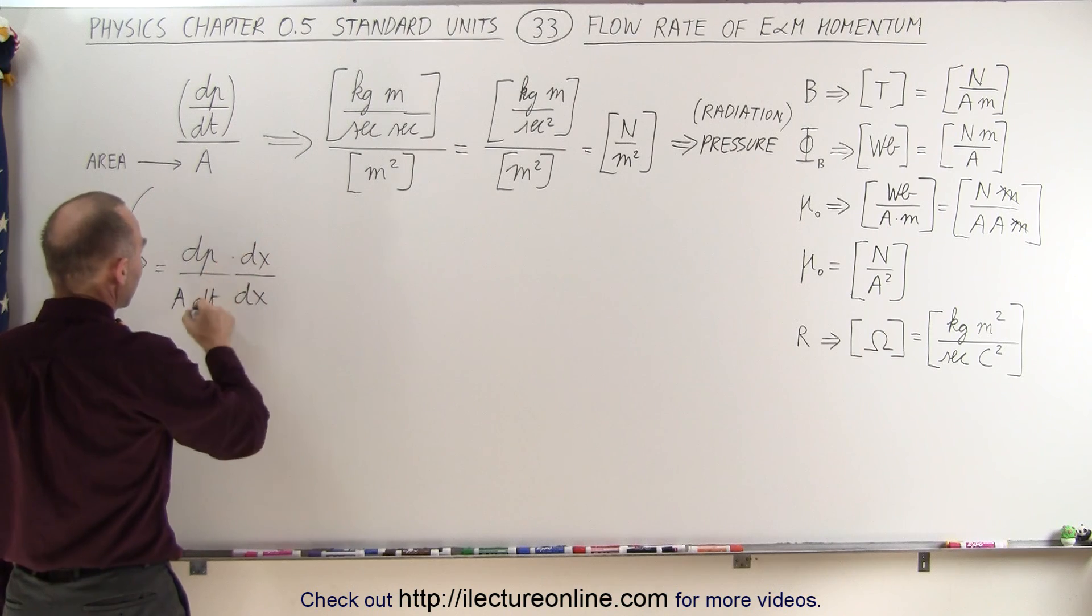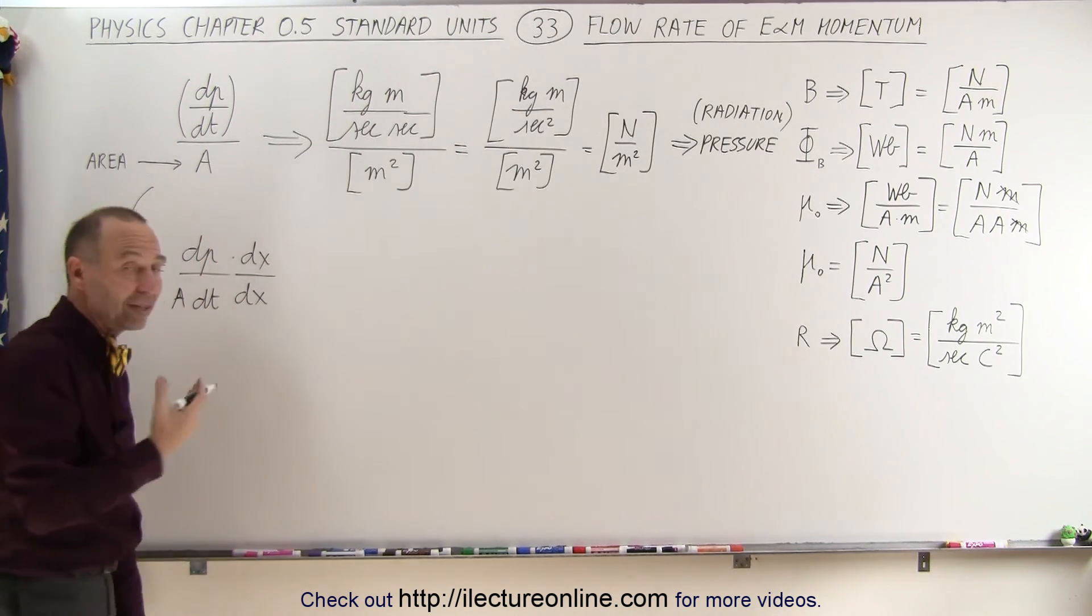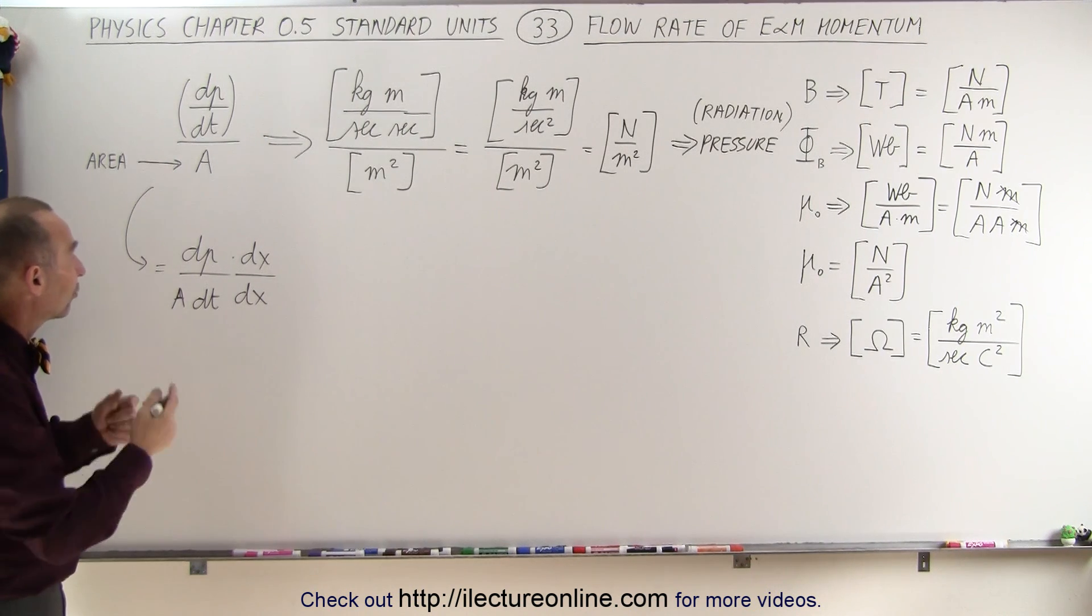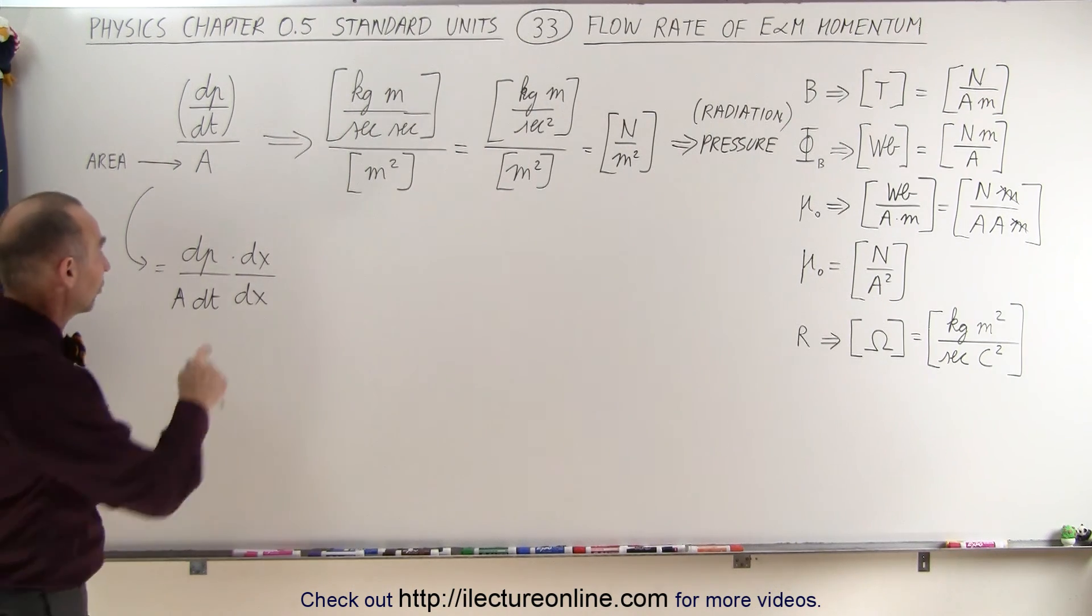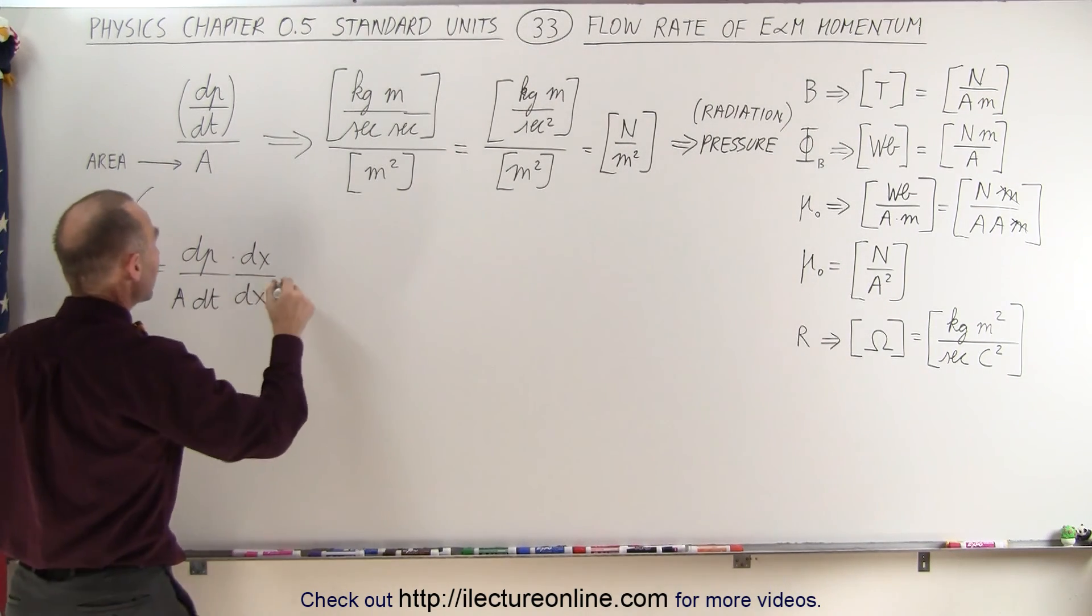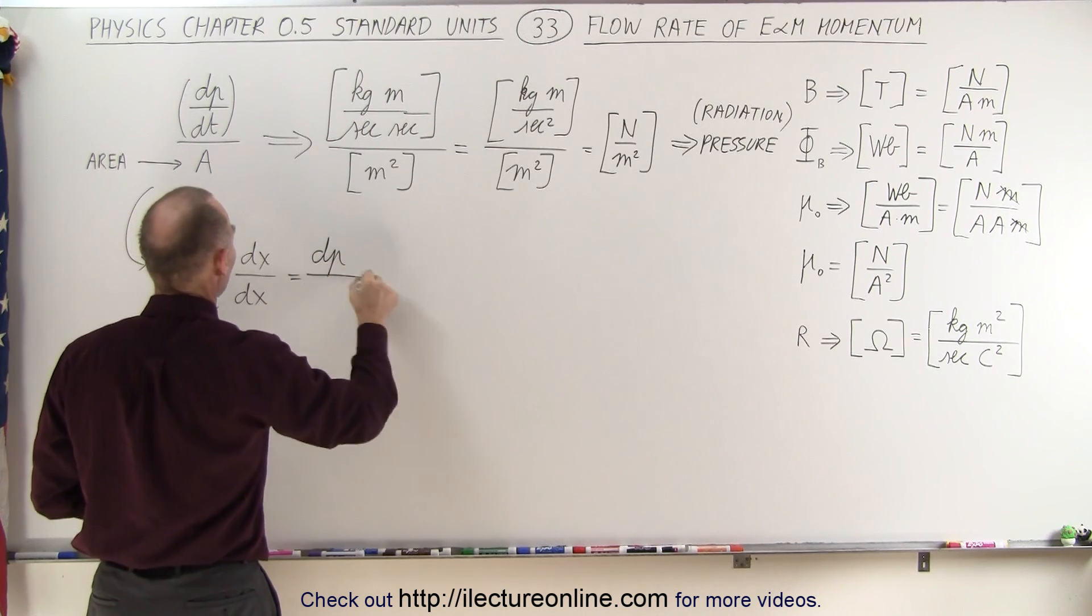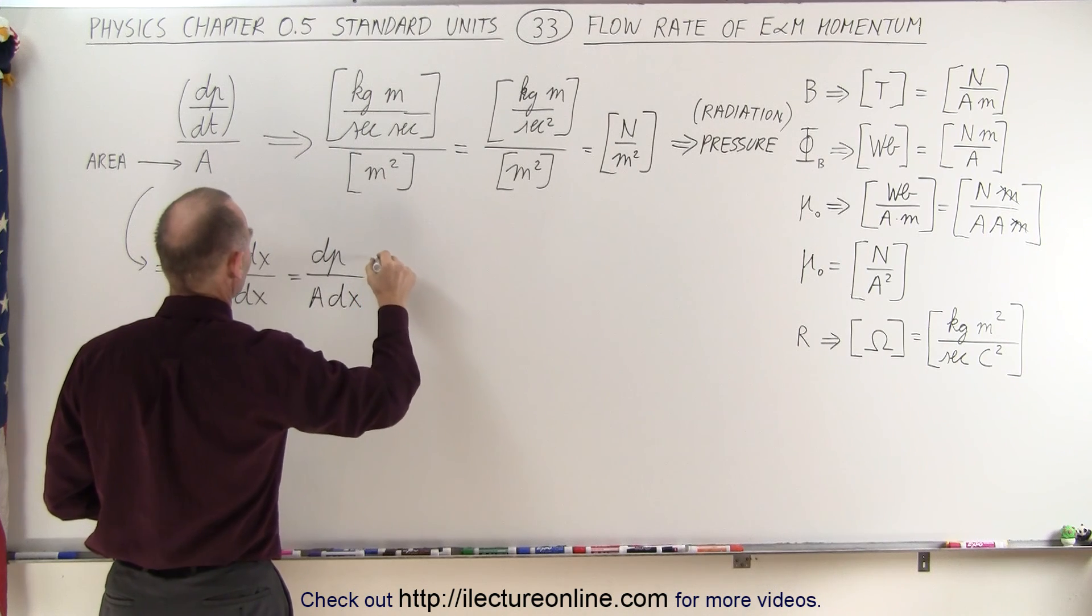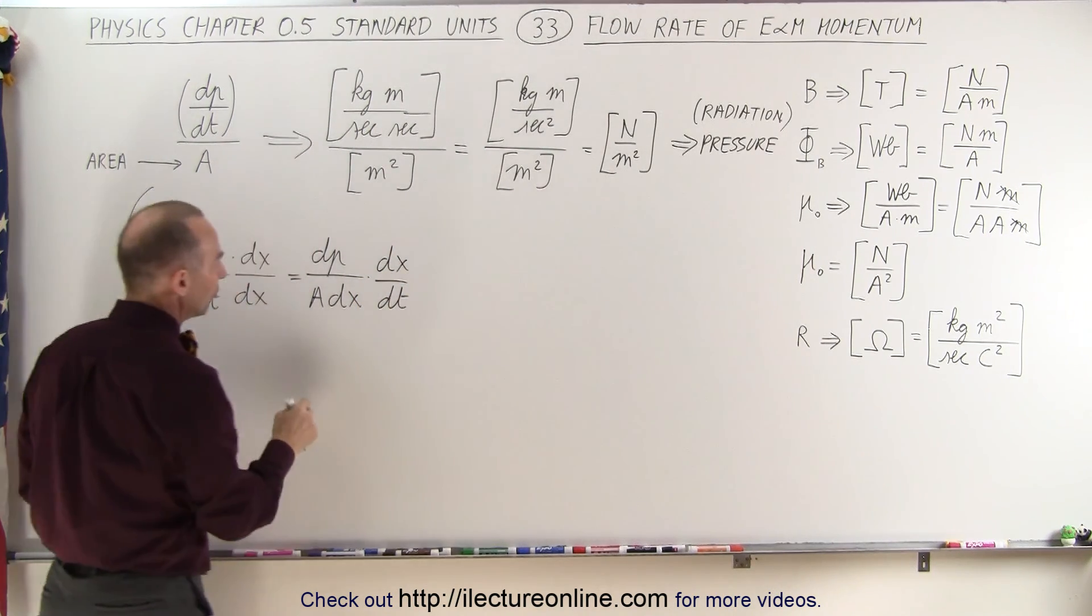And notice if we take dx/dt, well that would be equal to the speed, right? dx/dt is the definition of speed in differential form. And of course, since we're talking about E&M radiation, that would be the speed of light. So dx/dt could be written as c. So this can be written as dp divided by A times dx times dx/dt.